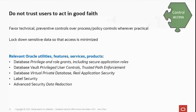Things you're going to use for access control: privilege grants, role grants. Don't forget secure application roles — one of the lesser-known but really more powerful database features. Database Vault for trusted path enforcement and privileged user controls is a great way to lock down access. Virtual Private Database, Real Application Security, and fine-grained access at the row level — same thing with Label Security. And Advanced Security's Data Redaction to prevent proliferation of sensitive data columns.